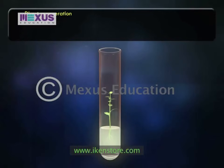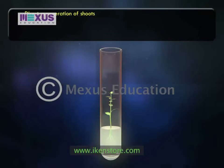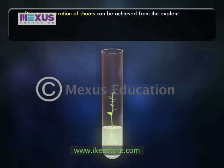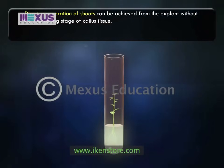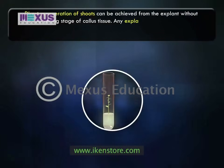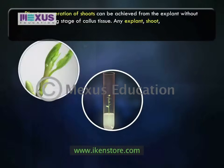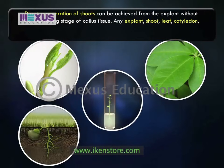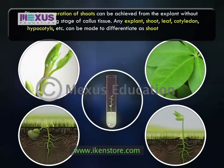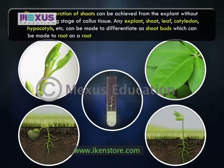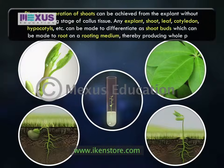Direct regeneration of shoots can be achieved from the explant without the intervening stage of callus tissue. Any explant — shoot, leaf, cotyledon, hypocotyls, etc. — can be made to differentiate as shoot buds, which can be made to root on a rooting medium, thereby producing the whole plant.